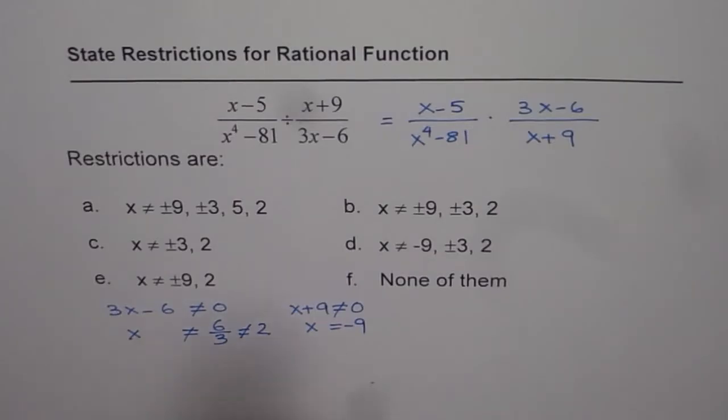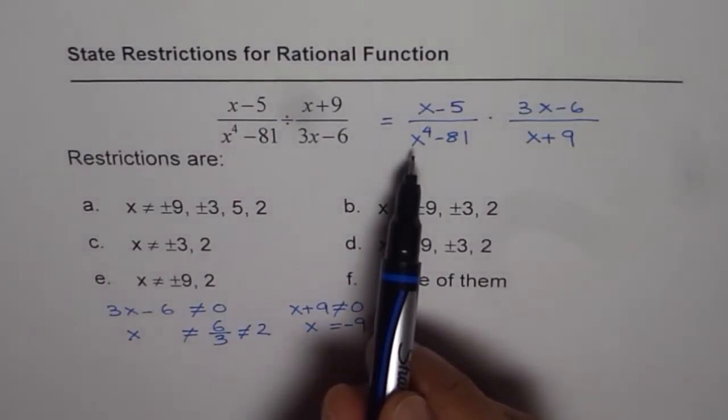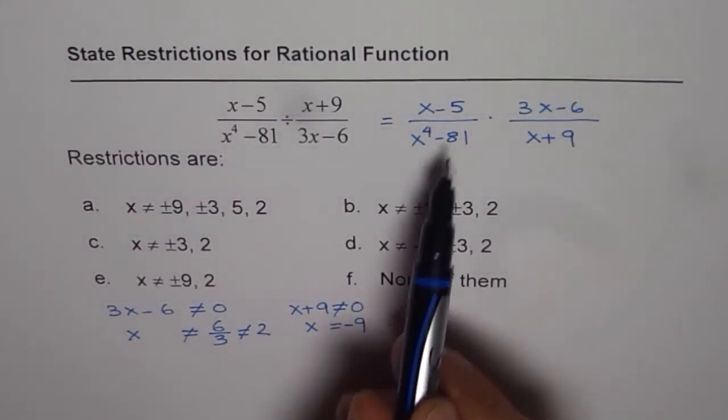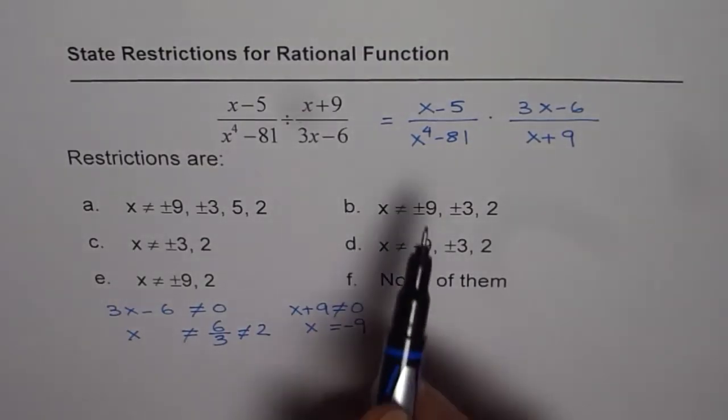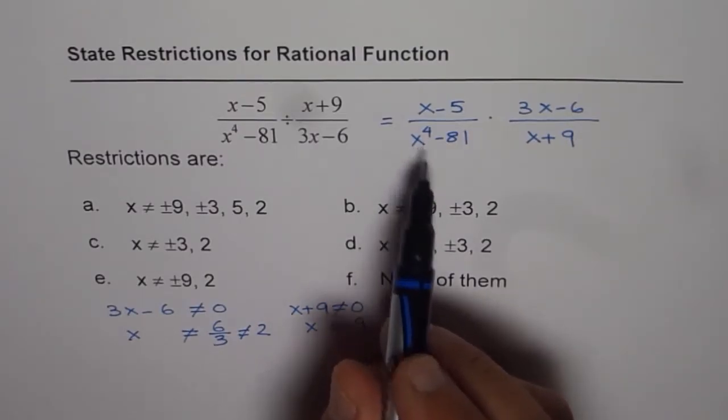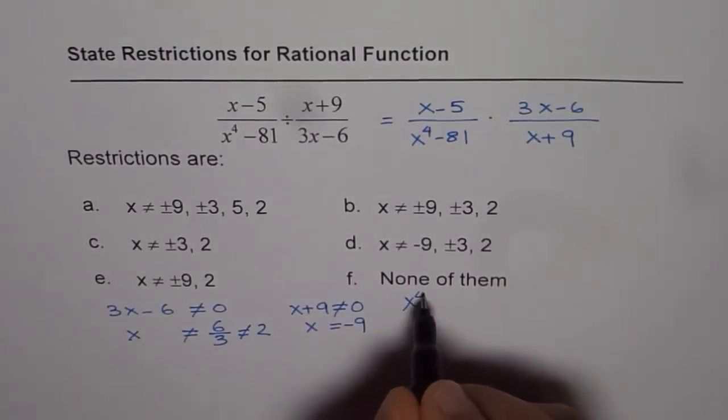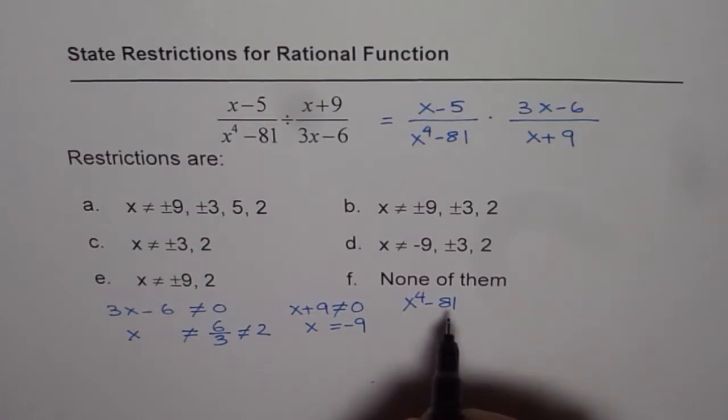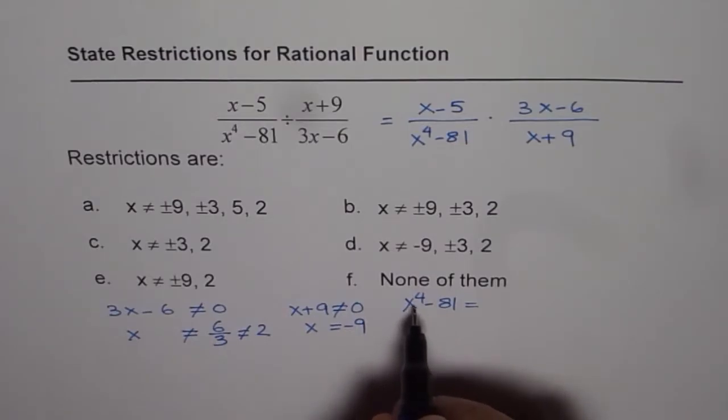The third restriction is from the factor x^4-81. We need to factor this to find the real values. x^4-81, where 81 is 9 squared, can be written as (x^2)^2 - 9^2.